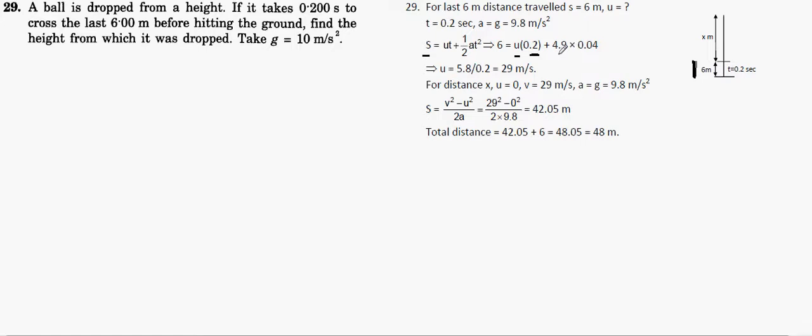If we consider 9.8 then it's 4.9; if we consider 10 then we get 5. Time is 0.2 seconds, so it may be 4.9 or 5. We'll get the velocity at that point, not the initial velocity. We'll get the velocity at that point.